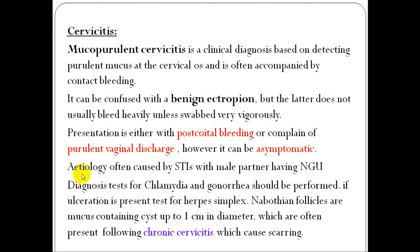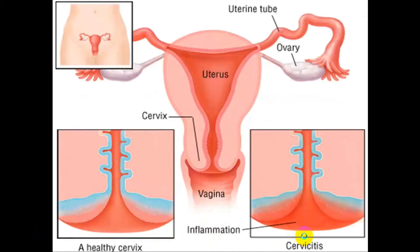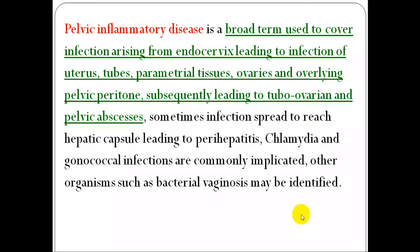However, it can be asymptomatic. Etiology is often caused by sexually transmitted infections such as non-gynaecological infections. Another cause may be ulceration due to herpes. Follicles or mucus contents up to 1 cm in diameter can lead to chronic cervicitis, causing scarring in the cervix. This shows an inflamed cervix compared to a healthy cervix, with redness possibly presenting during post-coital examination.